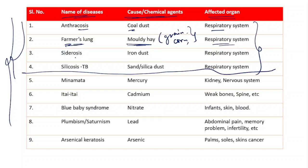Number three: Siderosis is caused because of iron dust and it also attacks the respiratory system. Number four: Silicosis is one kind of tuberculosis — it is caused because of sand and silicates and it also attacks the respiratory system.